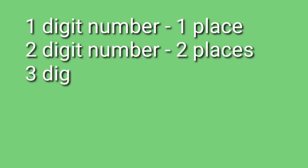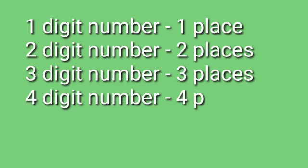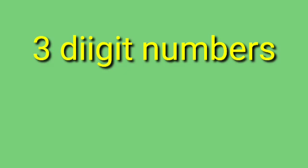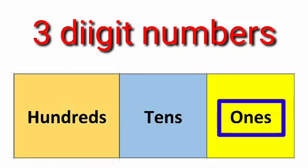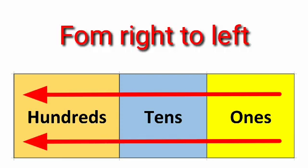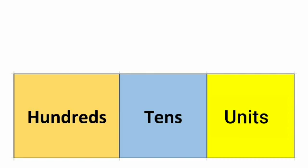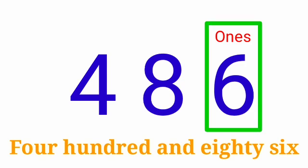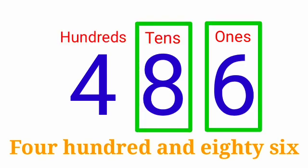We have heard some words: numbers, digits, place, place value. There is one place in one-digit numbers, two places in two-digit numbers, three places in three-digit numbers, four places in four-digit numbers, and five places in five-digit numbers, and so on. If we take a three-digit number, there are three places: one's place, ten's place, and hundred's place. We read the places from right to left, and one's place is also called unit's place. Taking the three-digit number 486: six is in one's place, eight is in ten's place, and four is in hundred's place.